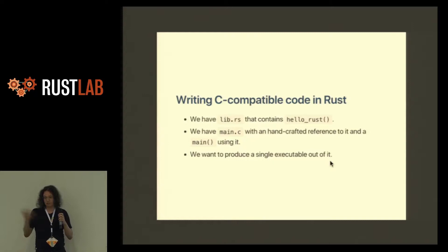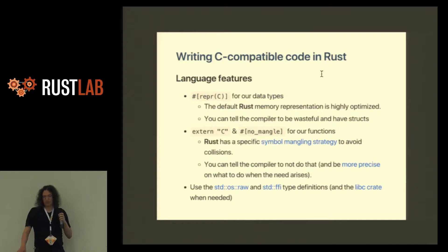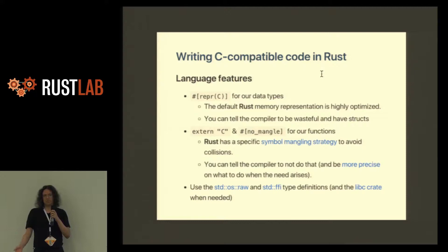Extra simple example. We have a lib.rs that contains our hello Rust function. We have a main.c that is the usual C entry point, and we want to get everything together and execute it. In Rust you can decorate your structures and say please represent them in memory in a certain way — either the Rust way, where fields get reordered so you don't have memory holes, or the C way, where the order requires padding so they are naturally aligned for their type. You have extern, which tells the compiler that a symbol has to be exported or imported from C.